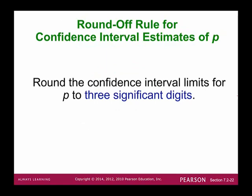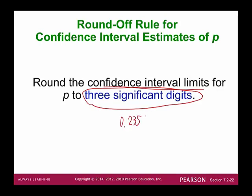The rounding rule for confidence interval estimates for population proportion P: round the confidence level limits to three significant digits — for example, something like 0.235.